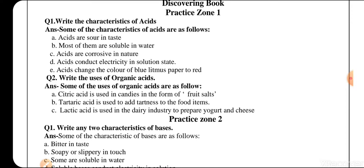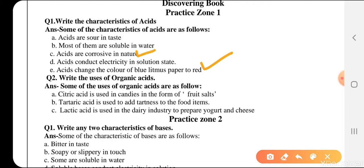Write the characteristics of acids. Some characteristics of acids are as follows: They are sour in taste, most of them are soluble in water, they conduct electricity in solution state, they convert blue litmus paper to red litmus paper, and they are corrosive in nature. They have highly harmful effects on living organisms and other substances. If they fall on any substance, they produce a burning effect and can damage that substance.